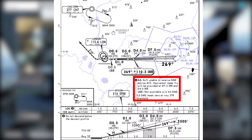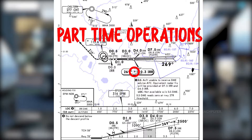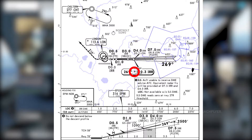There's a note: ILS aircraft unable to receive DME — advise ATC and an equivalent radar fix will be provided at 5 or 4 miles India Romeo Romeo. In the case of a localizer-only approach, it will not be available via the DME signal from the ILS. Also note the asterisk on the frequency 110.3 — this means the ILS frequency is not always on air; it operates part-time as decided by the airport authorities. For example, during nighttime noise abatement procedures, the frequency may not be usable.